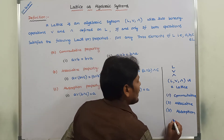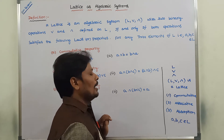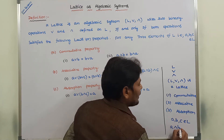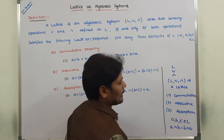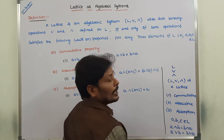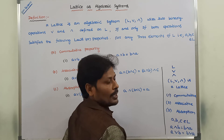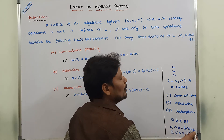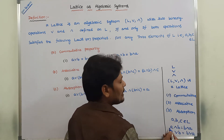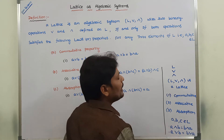Now, I am taking three elements A, B, C that belong to capital L. What is the commutative property? Commutative property is: A meet B is equal to B meet A. Next, A join B is equal to B join A, where A and B belong to capital L. So the result of A meet B equals B meet A, and the result of A join B equals B join A. This is the commutative property with respect to the meet operation and also with respect to the join operation.